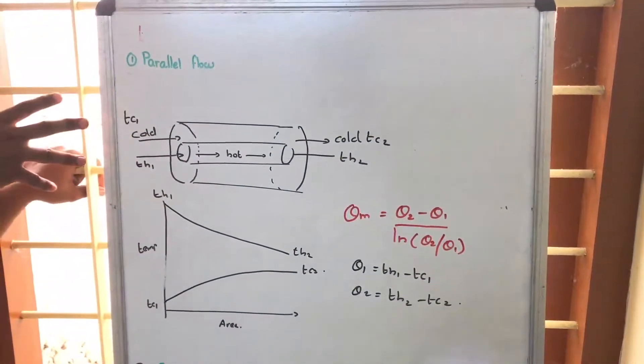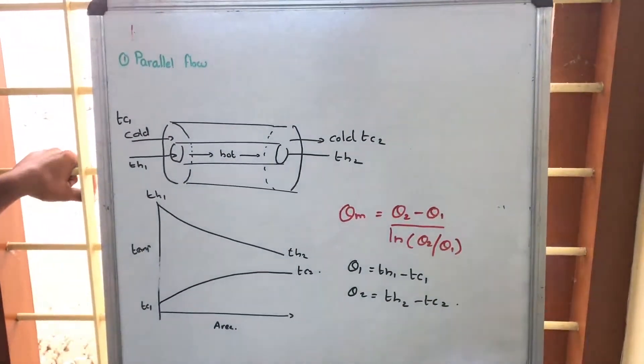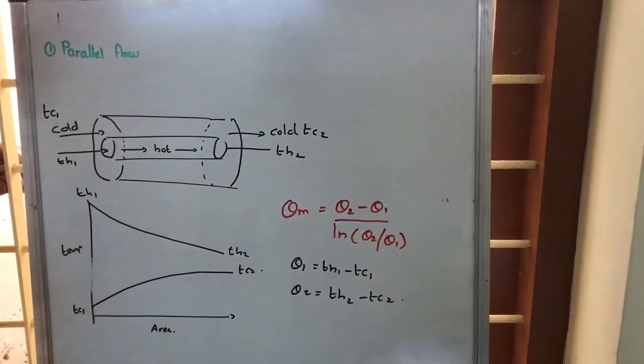In a parallel flow, both flows will be parallel, the direction of the flow will be parallel and theta m is given by theta 2 minus theta 1 divided by log theta 2 by theta 1.